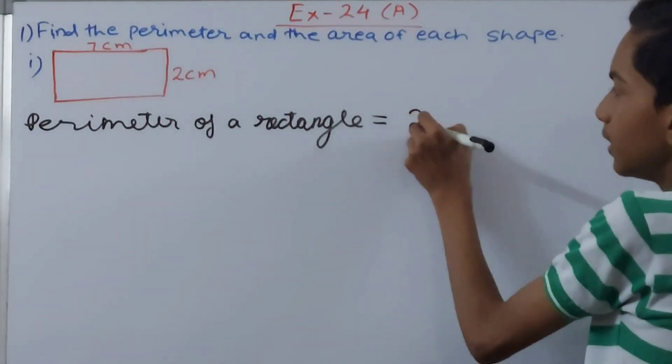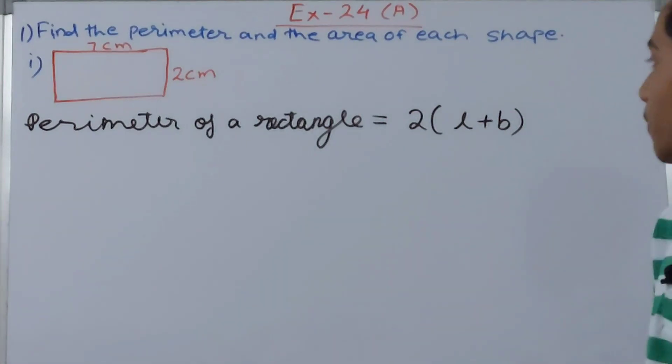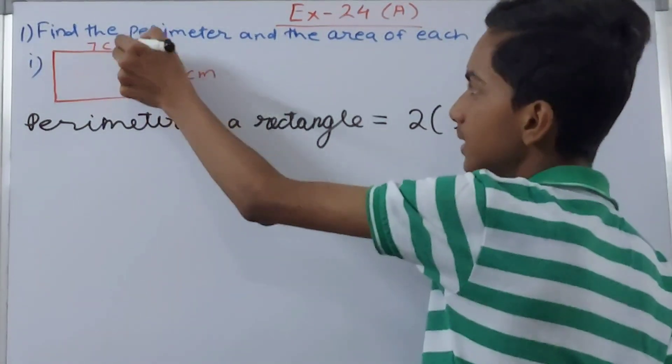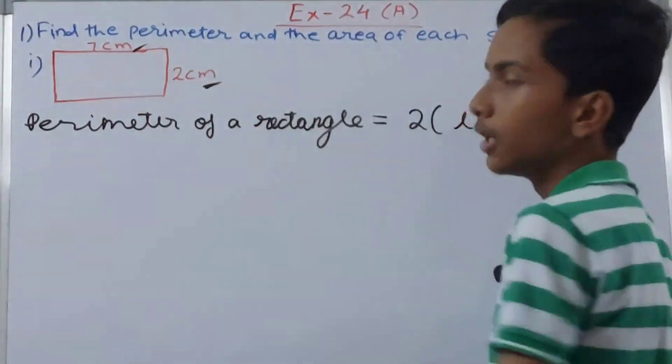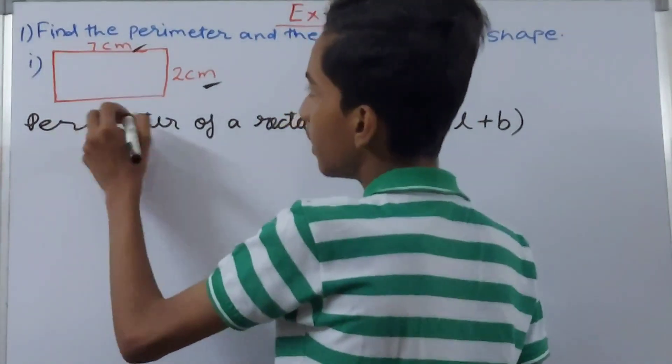Now this will be 2(l + b). This is the formula for the perimeter. Length is 7 and breadth is 2. So now solve this thing.